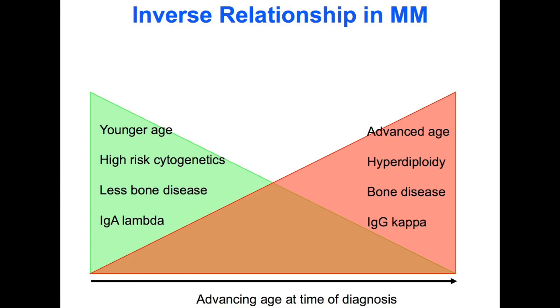This myeloma subtype is seen more commonly in the elderly. You would see it mostly in older individuals, slightly more common in males, with more mature, differentiated myeloma of the IgG kappa type. What I mean by mature and differentiated is that the cells resemble more like normal cells. When a cell resembles more its normal counterpart, they tend to be more responsive to treatment and associated with better prognosis.